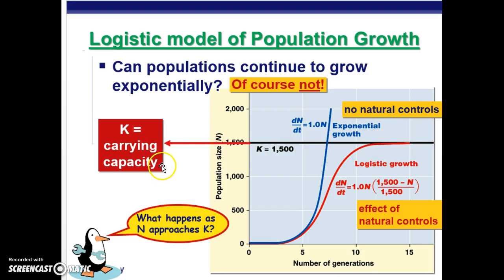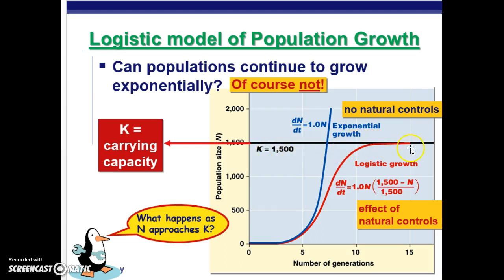Where logistic growth levels off is called the carrying capacity of the environment, or the K value. In this example, the population size reaches 1500 individuals and that's where the leveling off occurs, so K equals 1500 for this particular population. As N gets closer and closer to the K value, we get this leveling off — the slope becomes zero.